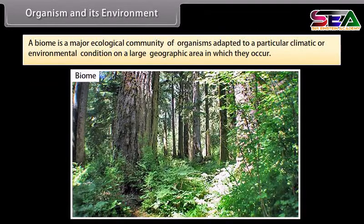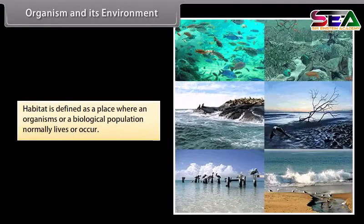A biome is a major ecological community of organisms adapted to a particular climatic and environmental condition on a large geographic area in which they occur. Habitat is defined as a place where organisms or a biological population normally live or occur.